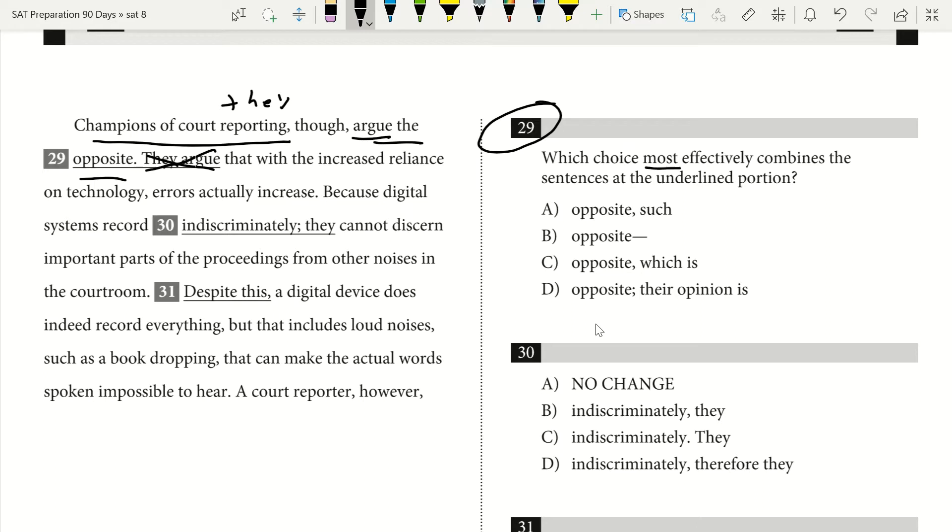I look at my question. I see I have which choice most effectively combines the sentences at the underlined portion. So obviously I want to get rid of 'they argue.' I see I have their opinion. Once again, that's really similar to 'they argue.' That's really repetitive, redundant. I don't want to use that. It's too wordy. So I can go ahead and get rid of D.